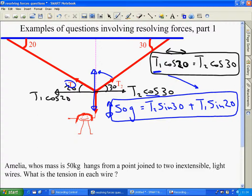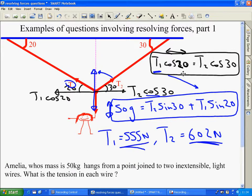I'm not going to do that for you. T1 equals 555 newtons is what you should get, and T2 equals 602 newtons. So, please work through it yourself to make sure that you agree with those answers.